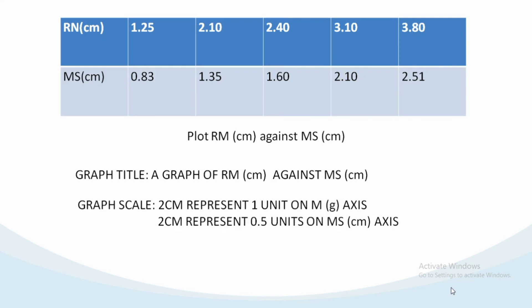For the scale, 2cm to represent 1 unit on M(g) axis and 2cm to represent 0.5 units on MS(cm) axis. This is the best way to pick out a scale for your graph.